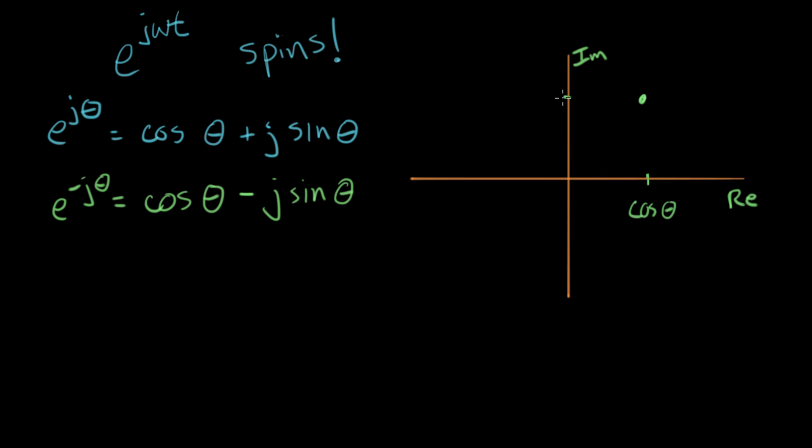And what's this coordinate here on the j-axis? That's sine theta. And if I draw a line right through our number, this is the angle theta.